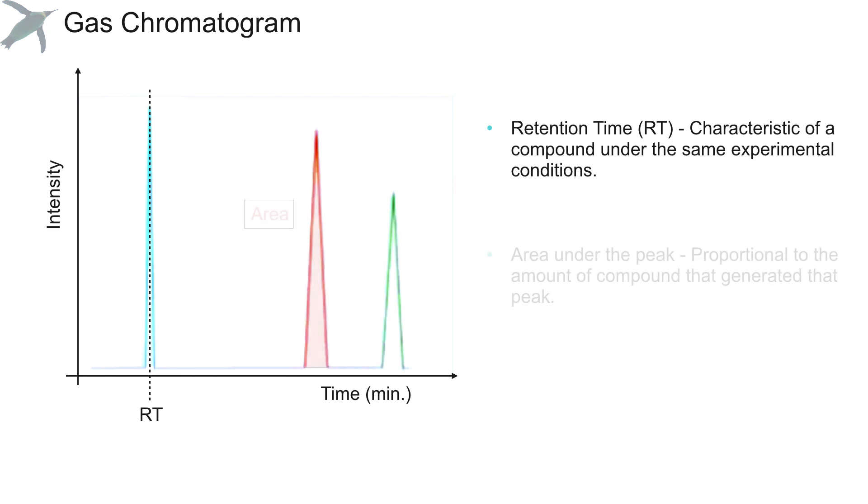The second piece of information is the area under the peak, which is expressed in arbitrary units, and is proportional to the amount of compound that generated that peak. So you can use this data to calculate the percent composition of any given sample.